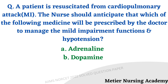A patient is resuscitated from a cardiopulmonary attack, otherwise MI. The nurse should anticipate which medicine the doctor will prescribe to manage mild impairment function and hypotension. The important words are mild impairment function and hypotension — the person has already been resuscitated. Options include Adrenaline and Dopamine. The right answer is option B, Dopamine. During resuscitation, Adrenaline may be used, but since resuscitation is already done, Dopamine is used to manage mild impairment and hypotension.